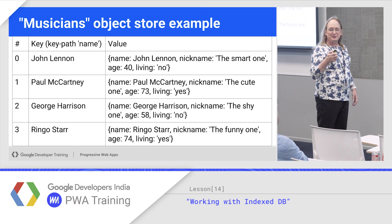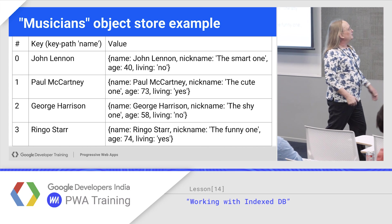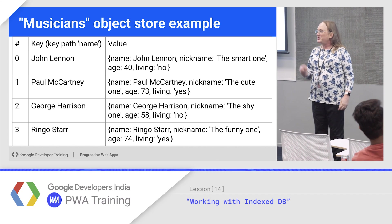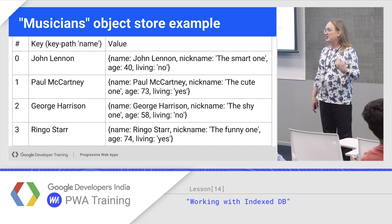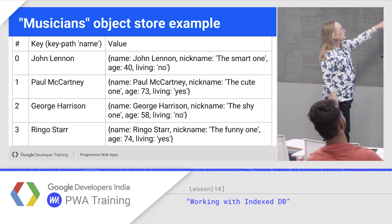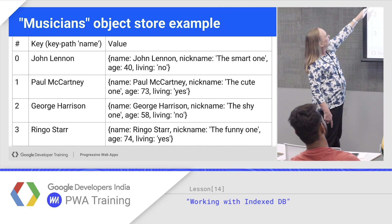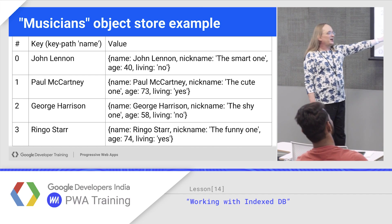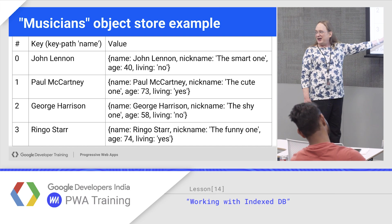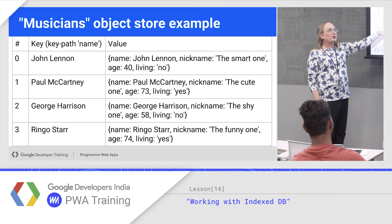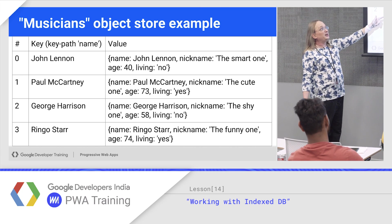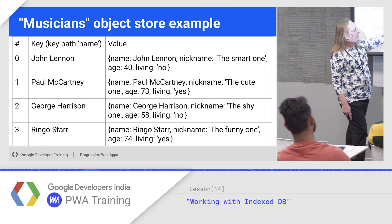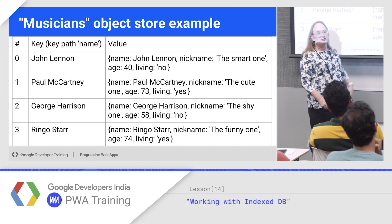In the example we showed at the start — the musicians — each object does get an internal ID number. You don't normally have access to it, although you can ask the database using a special key. Normally this is hidden from you. You can declare one of the columns a key and give it a key path, meaning you can search and sort on it. You can have multiple indexes, but it's one key per object store. So my key is the name, and the values are just standard JavaScript objects.